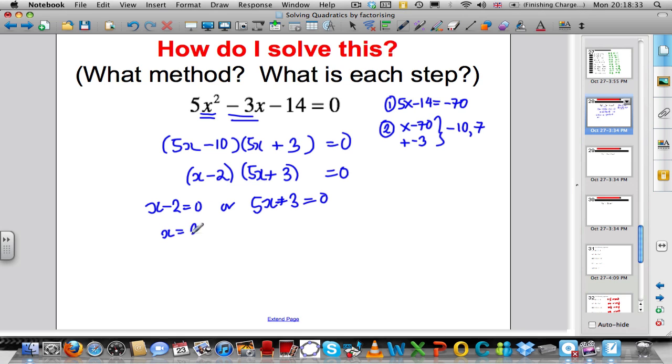Or, 5x plus 3 is 0, so 5x equals minus 3 and x is minus 3 divided by 5. Or a mathematician would write that as minus 3 fifths.